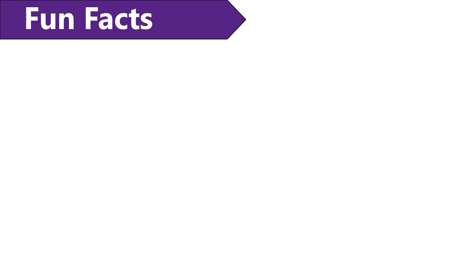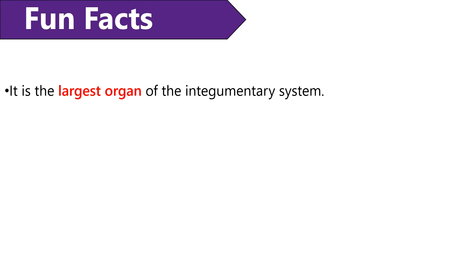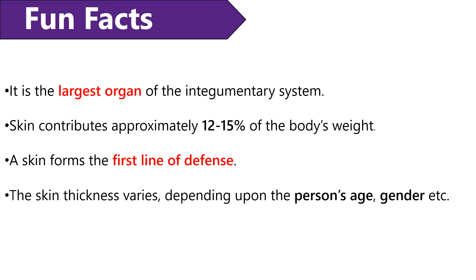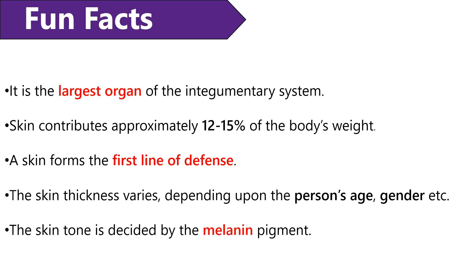We will end this video by discussing some fun facts about the skin. Skin is the largest organ of the integumentary system, but inside our body the small intestine is the largest organ. Skin contributes nearly 12 to 15% of the body's weight. Skin is the outermost layer of our body and forms the first line of defense against physical, chemical, and biological damage. The thickness of skin differs — our feet have a maximum thickness of 1.4 mm, whereas our eyelids possess the thinnest skin at 0.2 mm. Skin color is decided by the melanin pigment released by melanocytes; more production of melanin gives a darker skin tone.